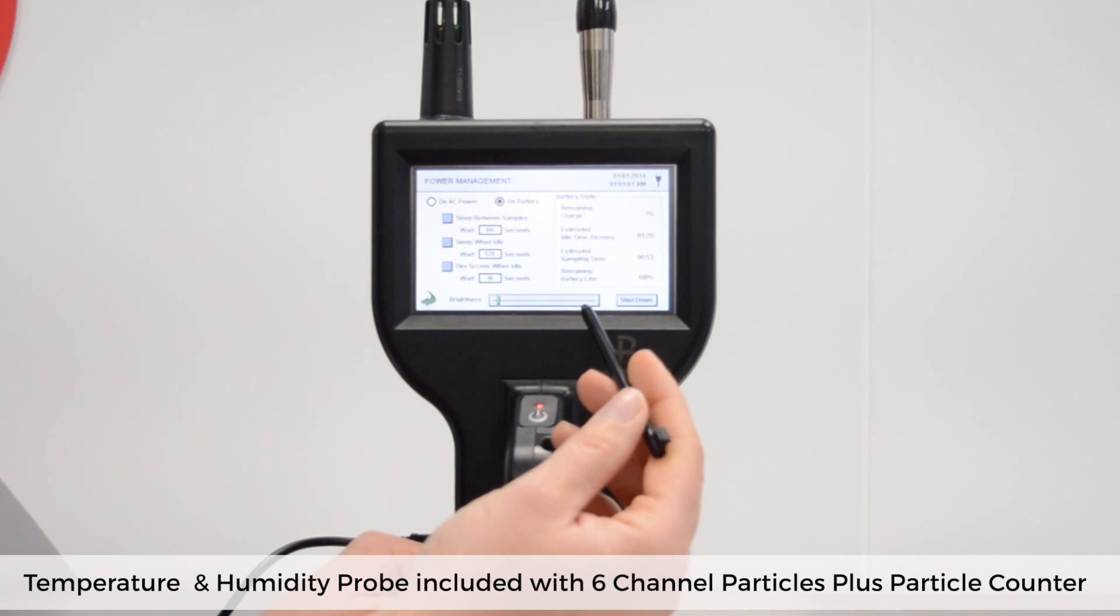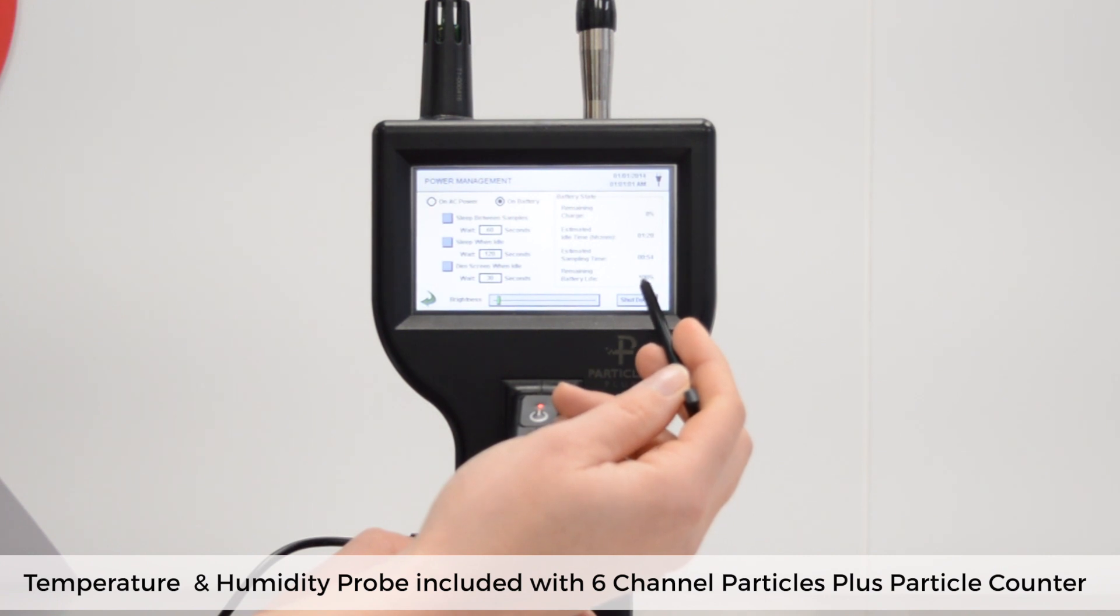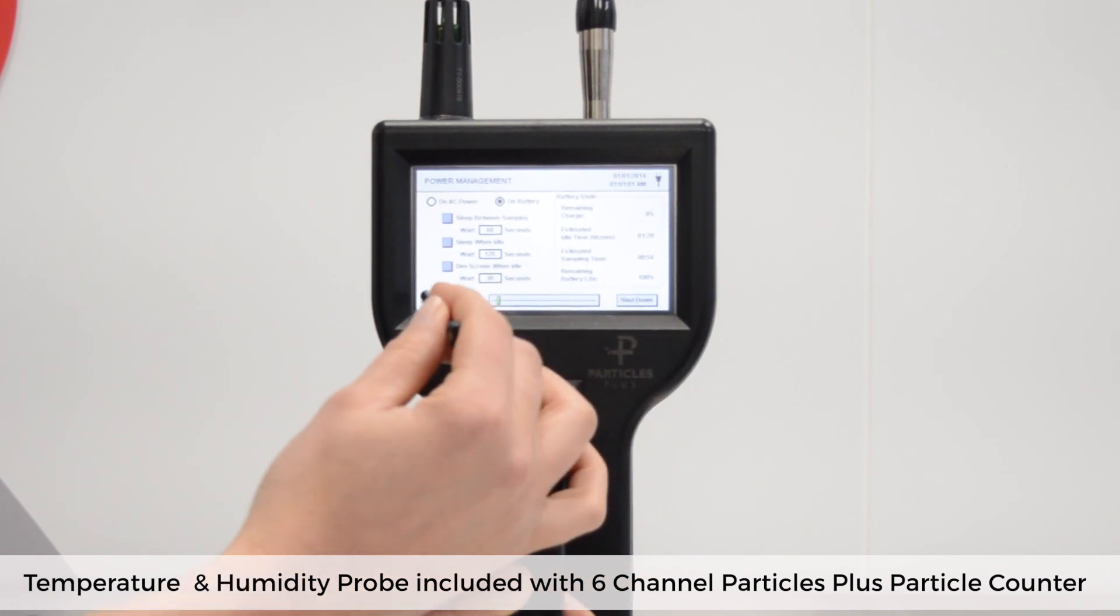The unit indicates the estimated battery time remaining and these figures will vary depending on the settings you selected, so you can see the impact of how much power you will save. This is really useful to check if the settings you selected are appropriate for the amount of testing you need to do. Let's tap back to go to the home screen.